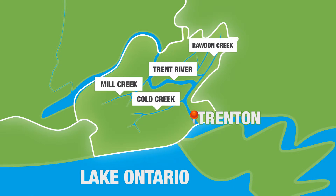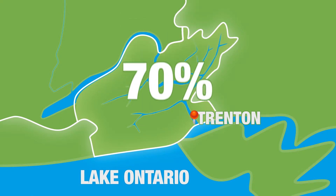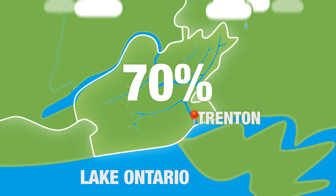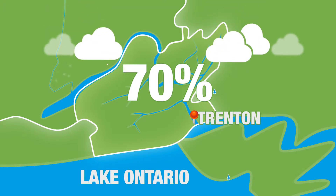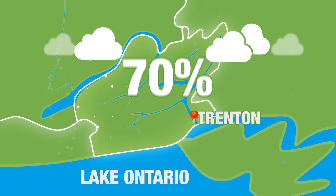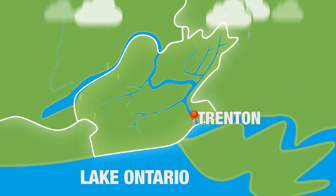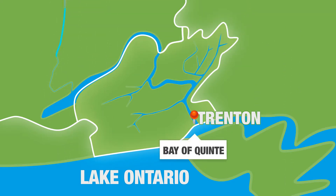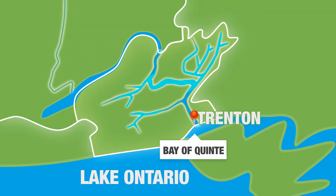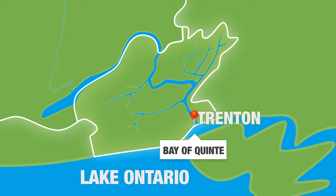Groundwater provides about 70% of the water, with the remainder coming from runoff from precipitation like rain and snow. All the water that is collected in the watershed flows to the Bay of Quinte and Lake Ontario through the Trent River and nearby smaller streams.